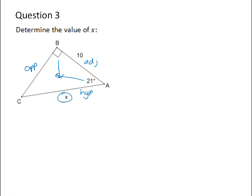x and 10 are hypotenuse and adjacent. So hypotenuse and adjacent combine to give you the ratio for cos. So the cos of 21 degrees is the adjacent side over the hypotenuse.